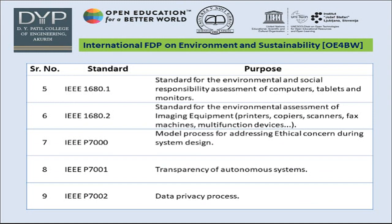Moving to IEEE standards: IEEE 1680.1 is the standard for environmental and social responsibility assessment of computers, tablets, and monitors — this is related to hardware. IEEE 1680.2 is the standard for environmental assessment of imaging equipment, such as printers, copiers, scanners, fax machines, and multiple function devices. IEEE P-7001 covers transparency of autonomous systems, and IEEE P-7002 covers data privacy process, including the model process for addressing ethical concerns during system design.